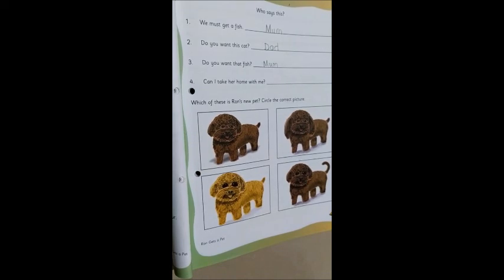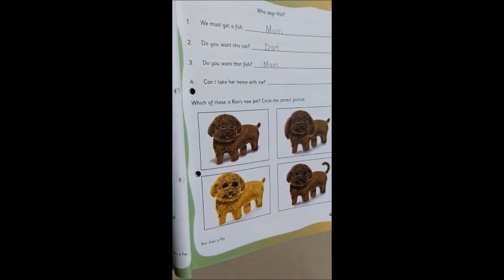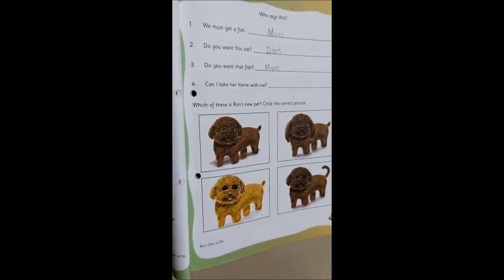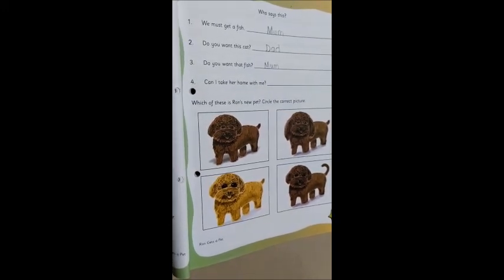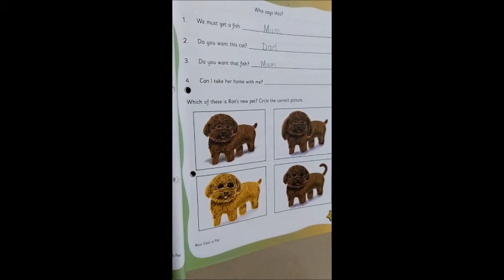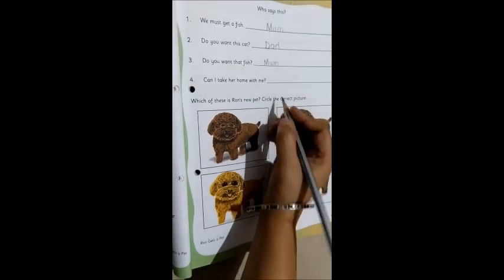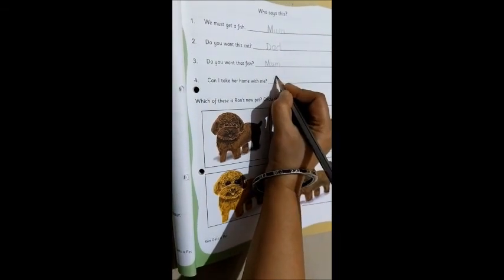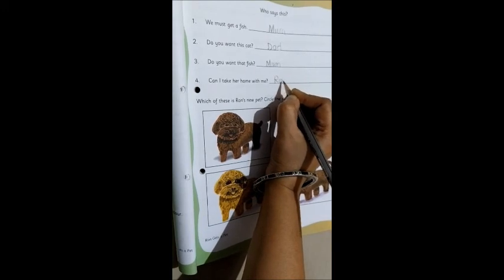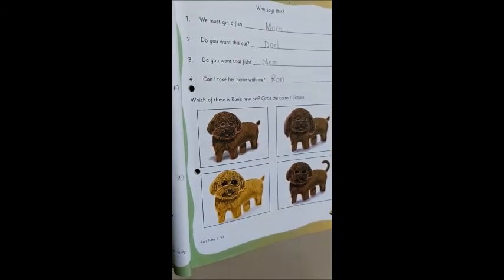Now, can I take her home with me? Who says that? Can I take her home with me? Perfect. It is Ron. So, we write R, O, and a N. Ron.